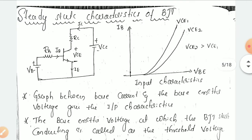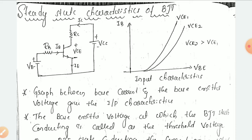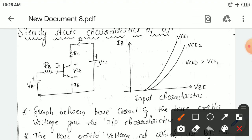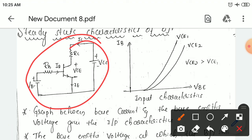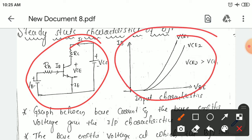Now the steady state characteristics of BJT — to understand the behavior of any switch, we have to understand the steady state characteristics, that is the output characteristics and input characteristics. Here also, in the previous video we discussed about the characteristics of the MOSFET switch, how it will behave for the variation in the drain current and source current. Here also in BJT, if you want to understand the behavior of BJT and choose it for different applications, we have to study the characteristics of that particular switch.